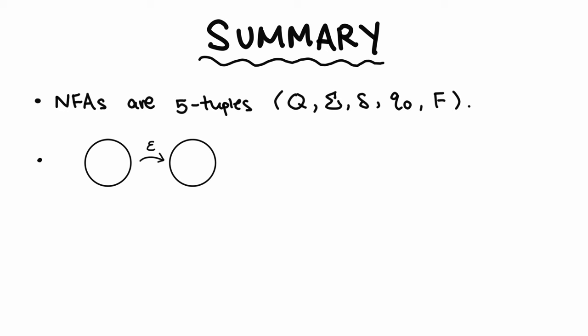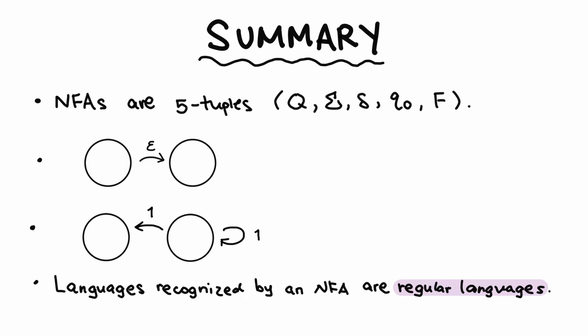So, let's summarize everything that was said in this video. 1. NFAs are 5 tuples. 2. Unlike DFAs, an NFA can also transition on the empty string. 3. Unlike DFAs again, the transition function produces a set of possible states instead of a single state. 4. And finally, languages recognized by an NFA are also regular languages.